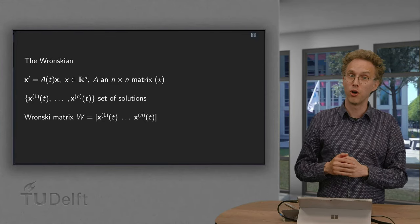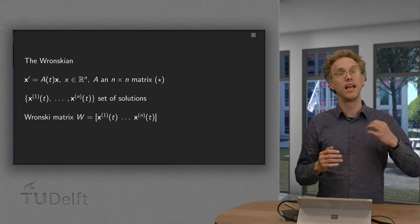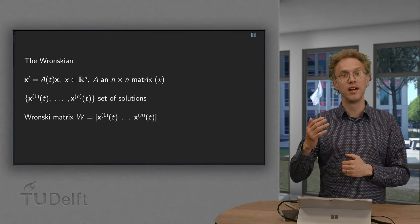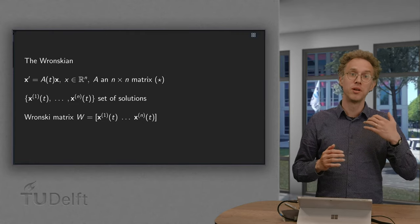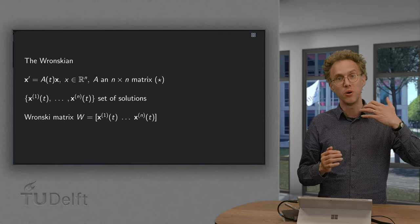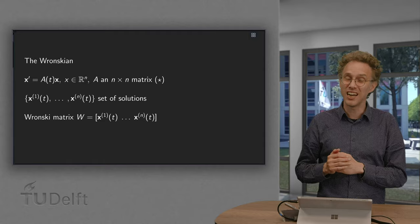If we have a few solutions of a homogeneous linear system, then any superposition will be a solution too. That is nice, of course, but how do we know that we have found all solutions of our problem? So when do we have the general solution?